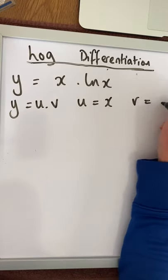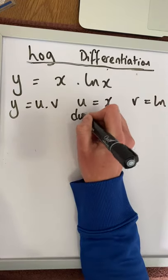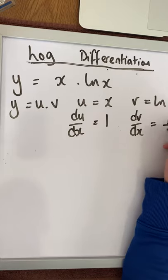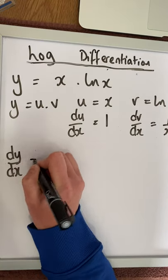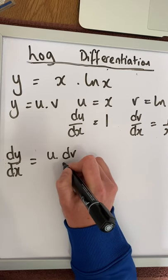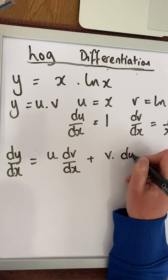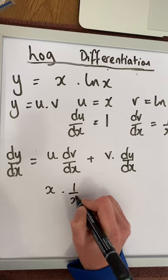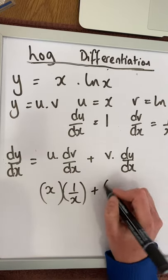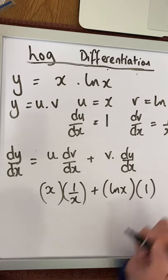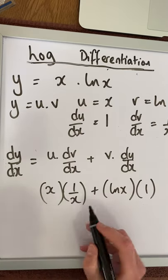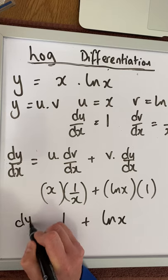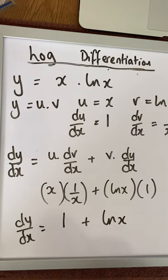We say y is equal to u multiplied by v, where u is x and v is the natural log of x. We differentiate separately: du/dx is equal to 1, and dv/dx is 1 over x. The product rule formula is u times dv/dx plus v times du/dx. That gives us x times 1 over x plus natural log of x times 1. x times 1 over x gives us 1, and 1 times natural log of x is simply natural log of x. So dy/dx is 1 plus natural log of x.